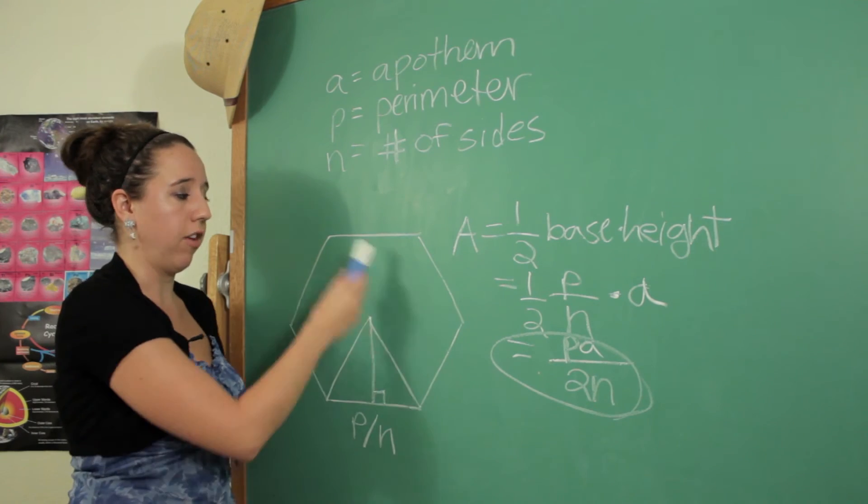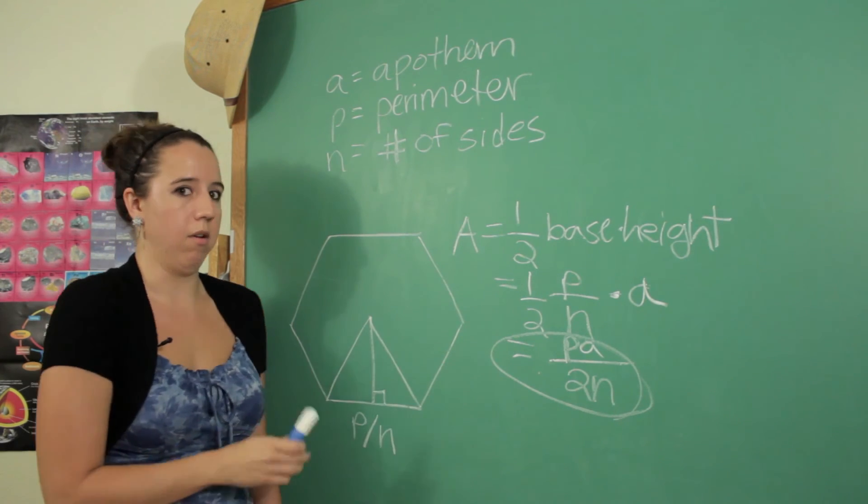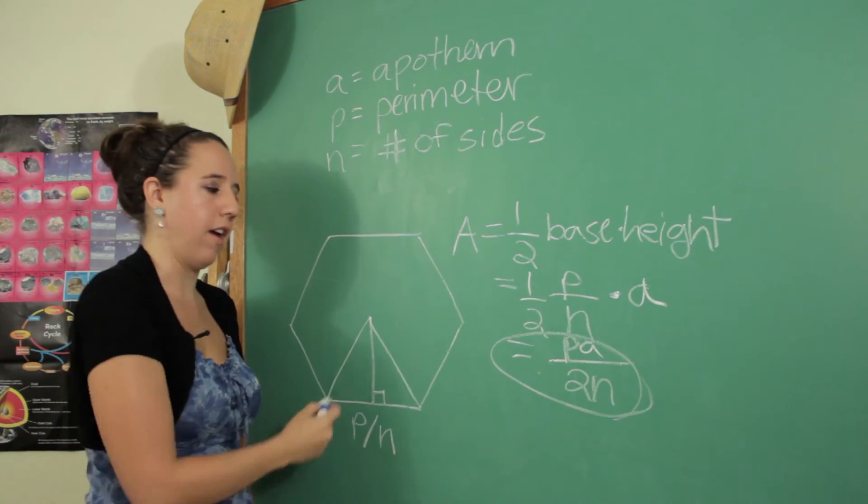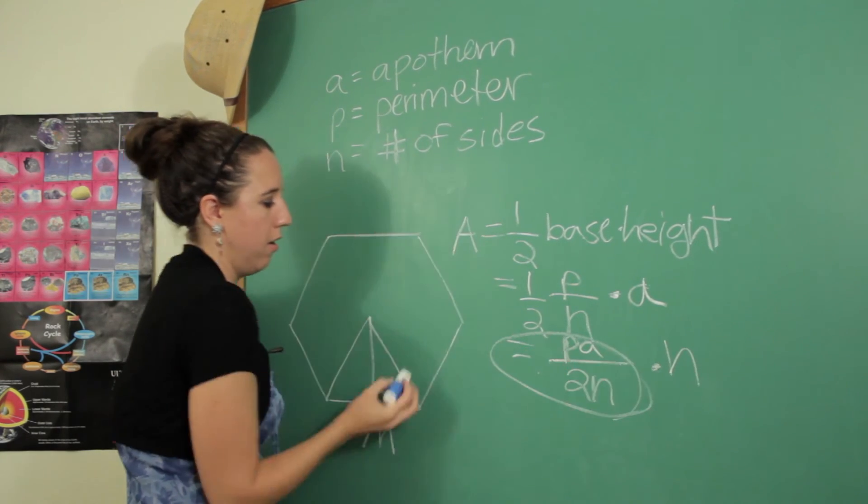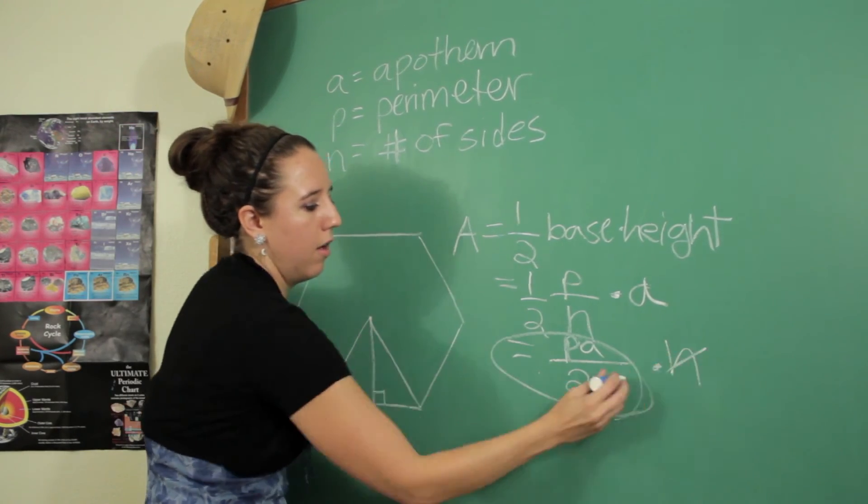Remember that's just one triangle. We actually have six triangles we're working with here or n triangles, one per side. So we're basically going to multiply this result by n, n triangles. These cancel.